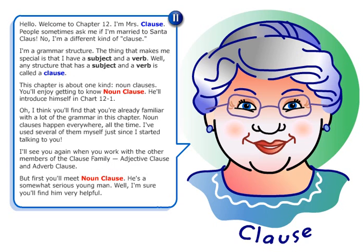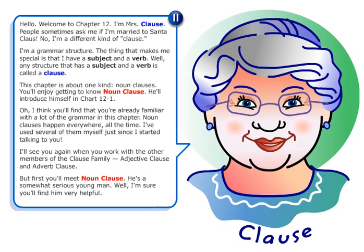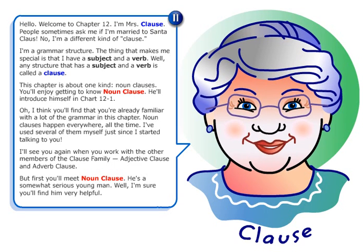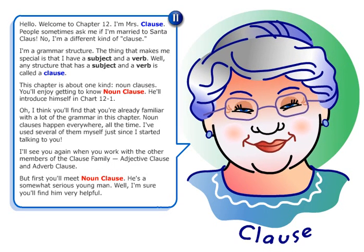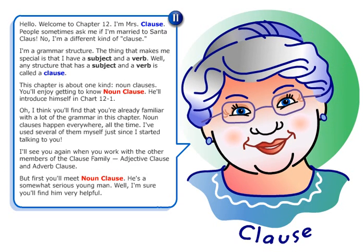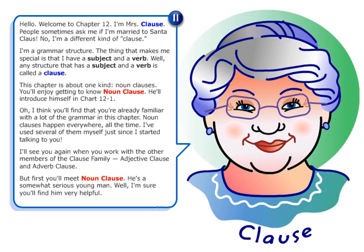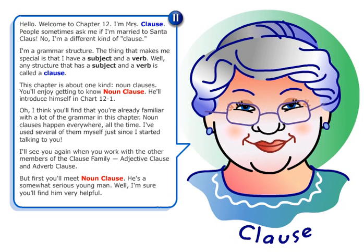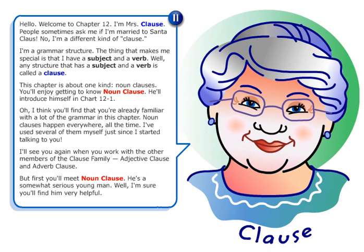The thing that makes me special is that I have a subject and a verb. Any structure that has a subject and a verb is called a clause. This chapter is about one kind: noun clauses.